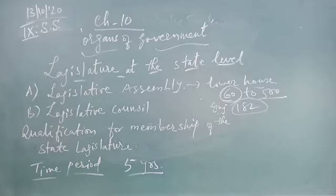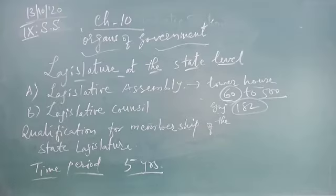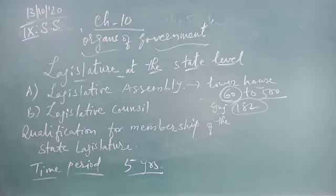When the government cannot function as per constitutional provisions or if the government cannot be formed, the governor can send a recommendation to the President of India to dissolve the government. The President then dissolves the legislative assembly and imposes President's rule in that state.